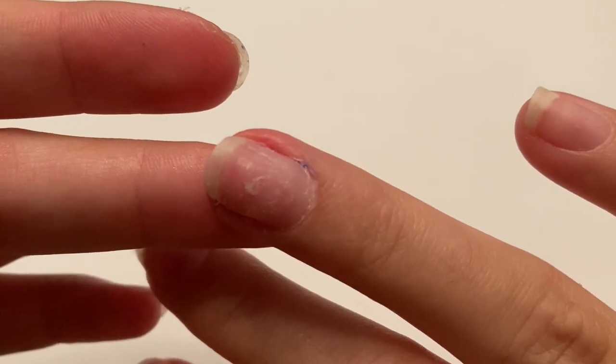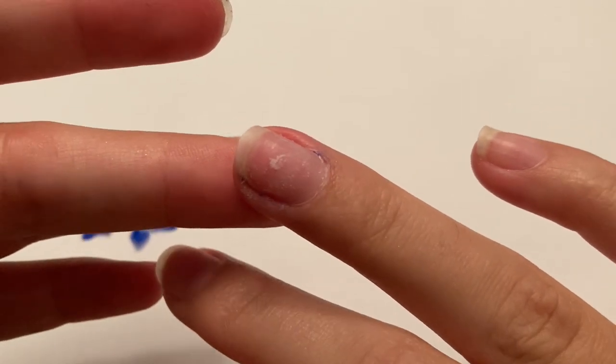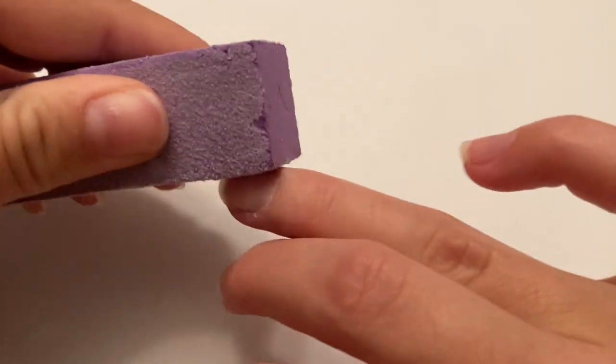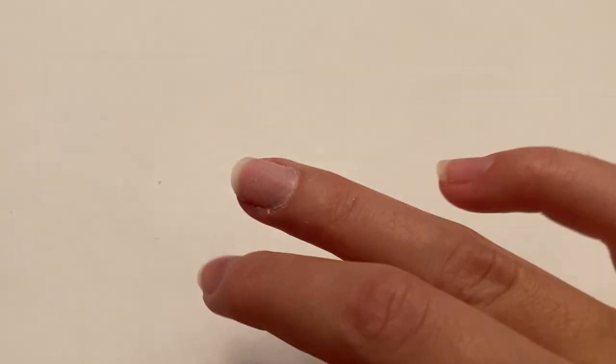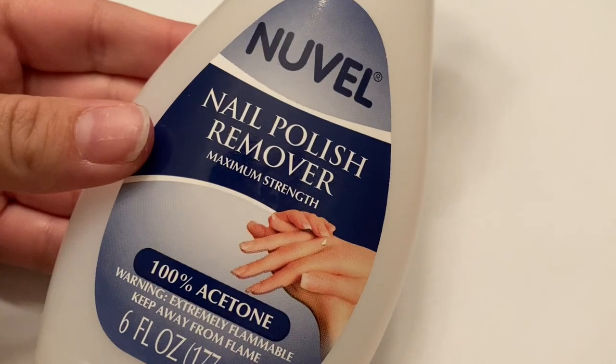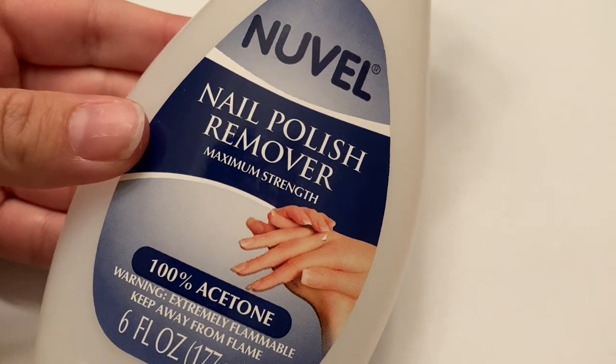There might be sometimes dried gel left on your nail and this is super easy to get off. So you can either buff it off or you can use acetone, really whichever you prefer.